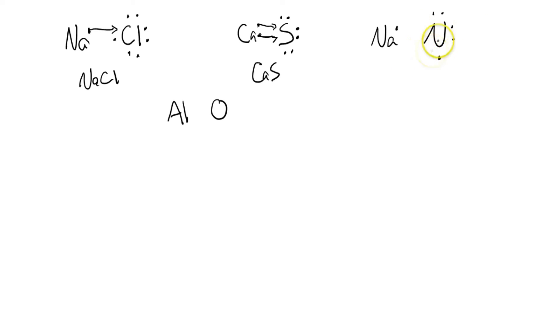So nitrogen here then, since it only has 5 valence electrons, it wants 3 more, right? It's got 3 open spaces. Well, so the 1 sodium electron here can donate 1, and now sodium is happy, but nitrogen is not.